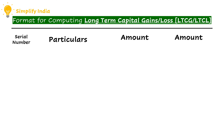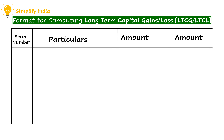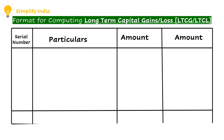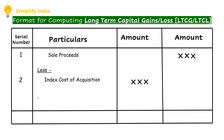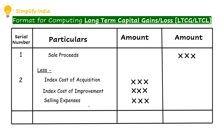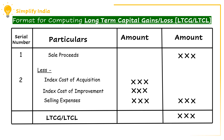Next, let us learn the format for computation of long-term capital gain or long-term capital loss. Here, in case of long-term capital gain or loss, we have to consider the indexation benefit, which is applicable only in case of long-term capital assets. We have to take sales proceeds from which we have to deduct index cost of acquisition, index cost of improvement, and the selling expenses. When we deduct all these three items from the sales proceeds, we arrive at long-term capital gain or long-term capital loss.